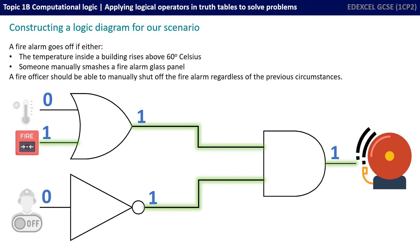We have exactly the same situation. We have a one out of the OR gate, a one out of the NOT gate. So that's two 1s into the AND gate and the fire alarm goes off.